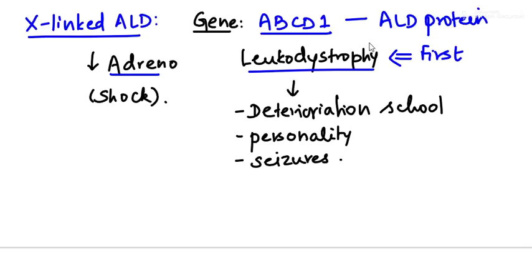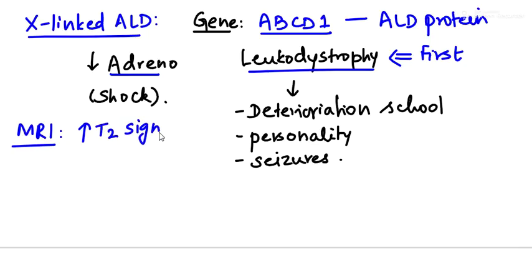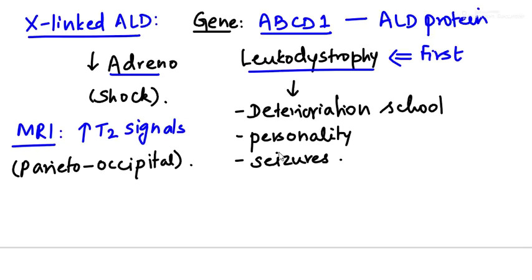For diagnosis of ALD: increased levels of very long chain fatty acids, increased phytanic acid, and decreased plasmalogen levels. On MRI of the brain, there is increased T2 signal intensity, especially in the parieto-occipital region, which is the area predominantly affected by adrenoleukodystrophy.